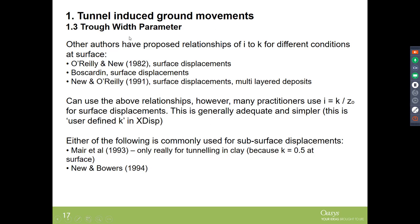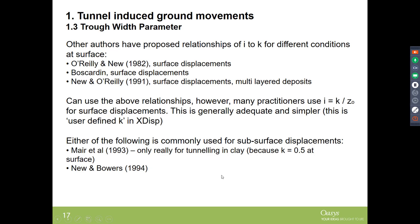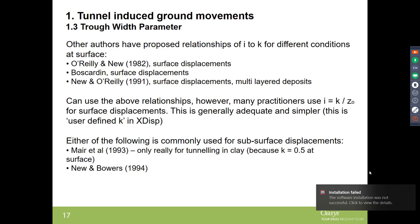For surface trough width parameters, the O'Reilly and New papers cover surface displacements and multi-layer deposits, and the Boscarden paper is also relevant. For displacements below the surface, Mair et al. gives good predictions for clay, and Nguyen-Bowers provides predictions for different soil types. These are all useful references to consult when inputting trough width parameters.